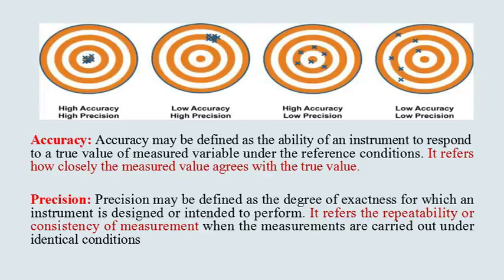Accuracy may be defined as the ability of an instrument to respond to the true value of a measured variable under reference conditions. It refers to how closely the measured value agrees with the true value. Precision may be defined as the degree of exactness for which an instrument is designed or intended to perform. It refers to the repeatability or consistency of measurement when measurements are carried out under identical conditions.